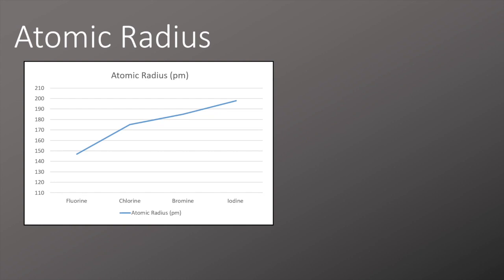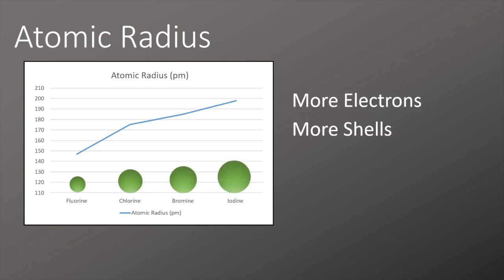Similar to the group 2 metals, as we go down the group the atomic radius increases. This is because we have more electrons, more electrons means more shells, and more shells means a bigger atomic radius.